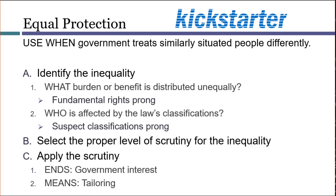So, this concludes our introductory tour of the equal protection methodology. Now, there are some elaborations on this structure that can be important in certain types of cases — for example, intermediate scrutiny, and also the disparate impact theory of discrimination. But those are concepts that we can add on top of the basic structure that we've seen in these videos.